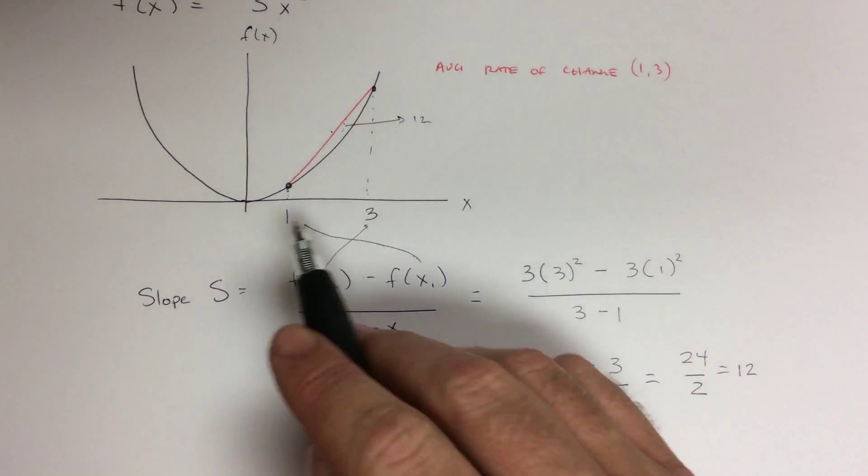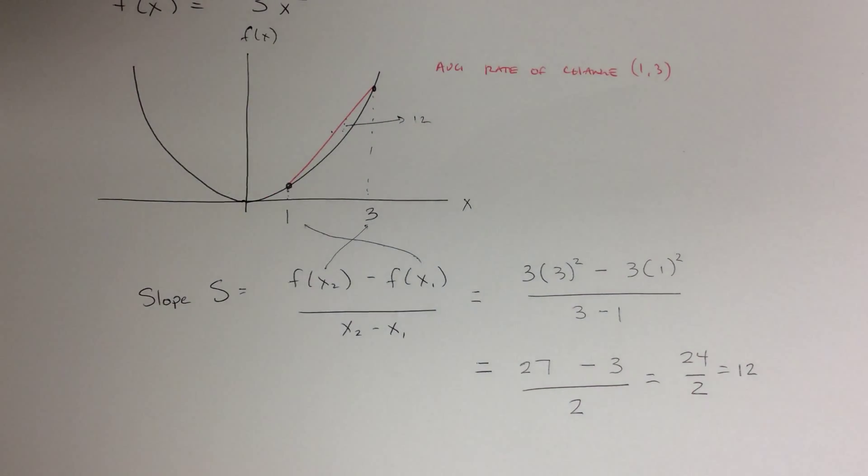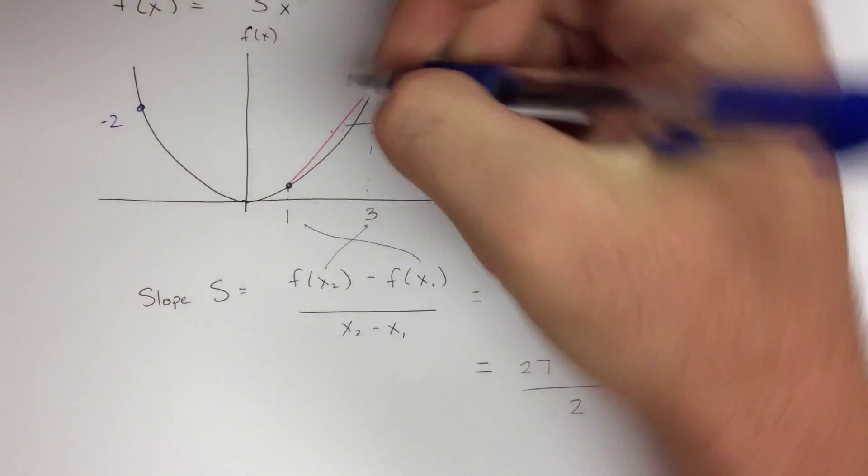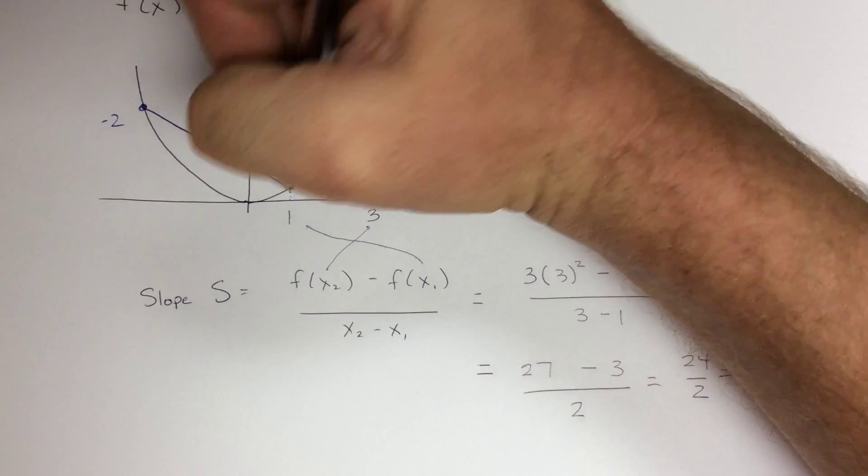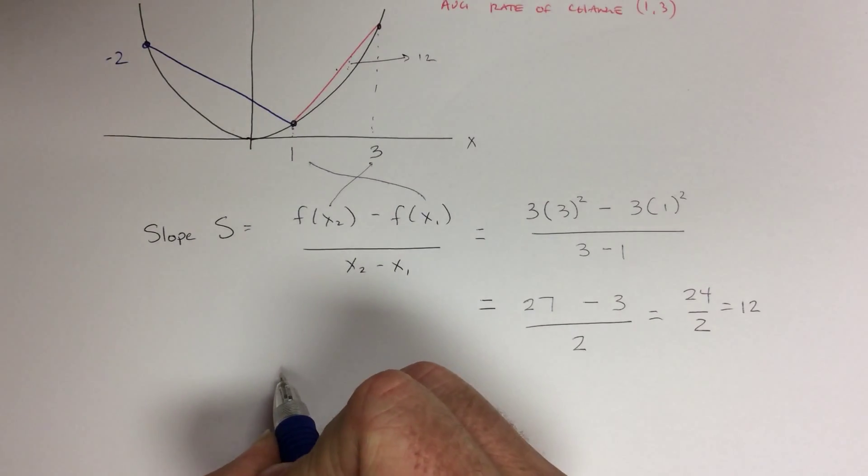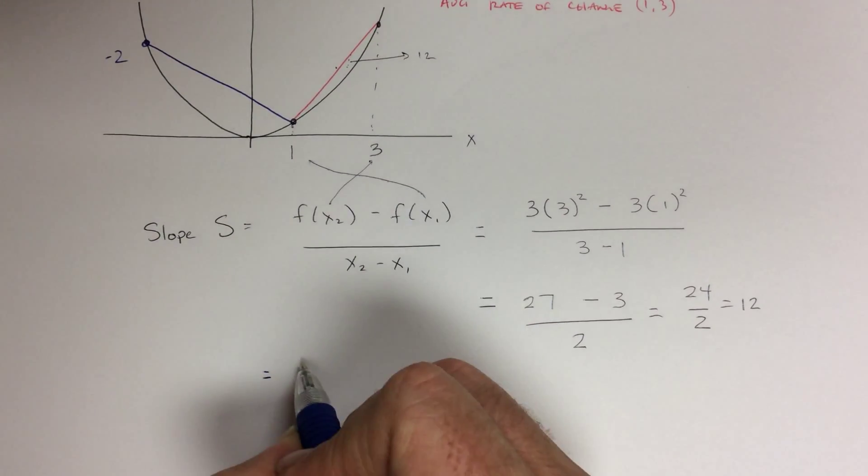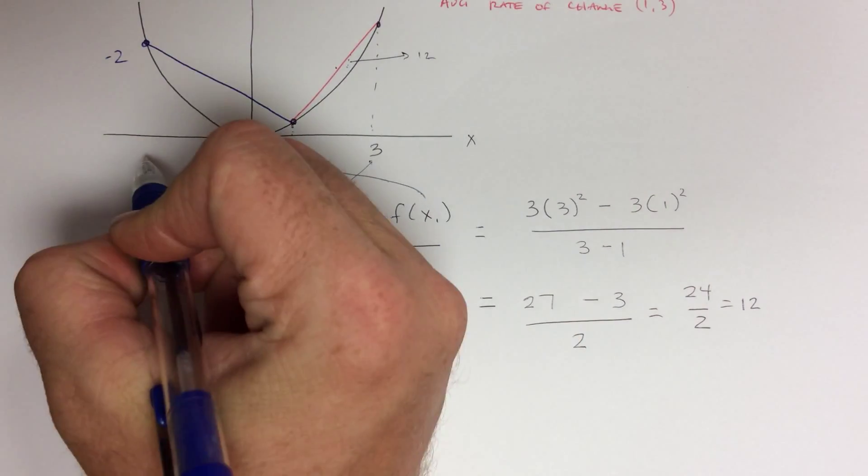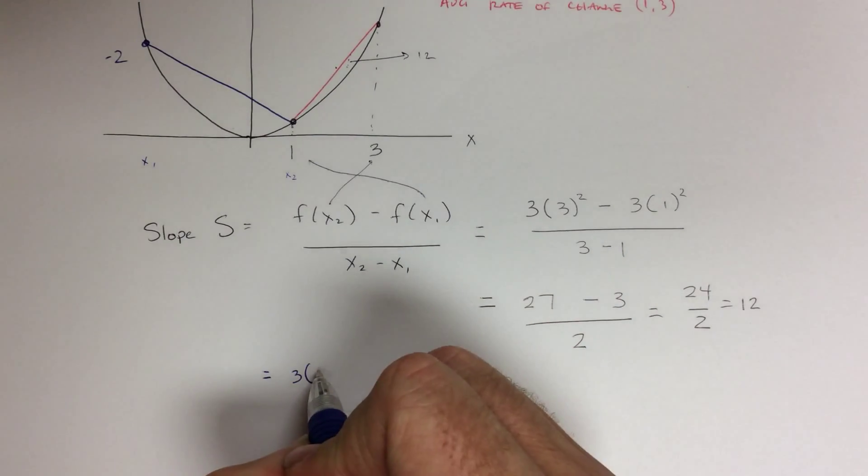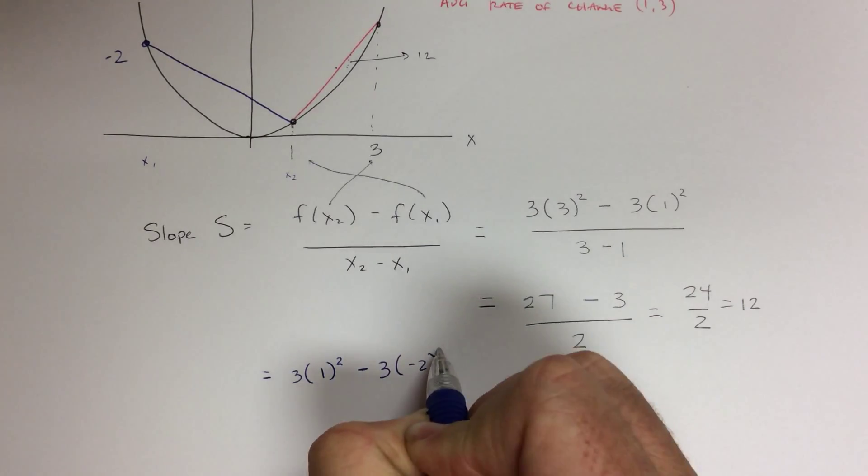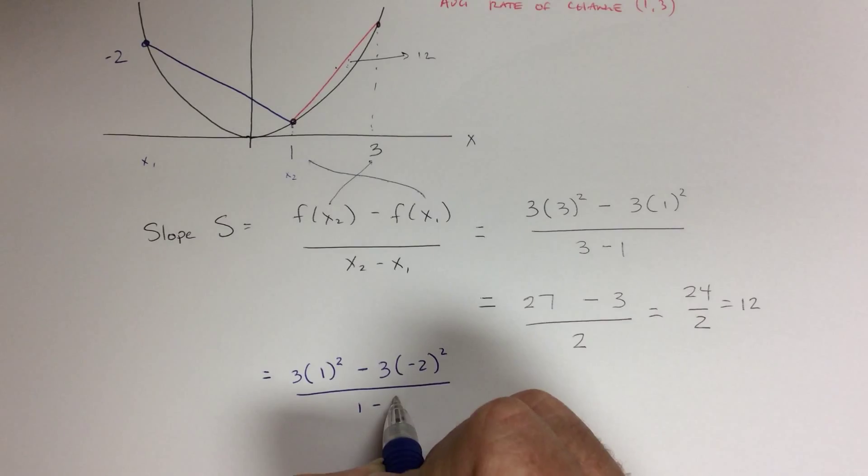Now I can do this for other points. I can choose any point on this curve and look at that. So I can look at the point from negative 2 to 1, and I can solve that. All I have to do is just plug that in here. So let's look at that example. So I have f(x₂), so that's 3 times, well in this case I'm going to say that x₁ now is x₂ and negative 2 is x₁. So I do 3 times 1 squared minus 3 times negative 2 squared, all over 1 minus negative 2.